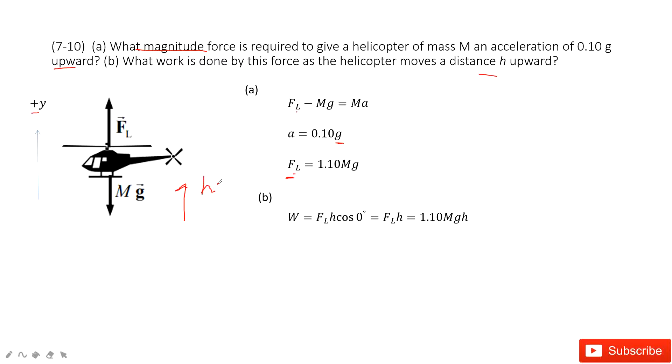So you can see, the angle between Fl and h is 0, so it becomes cosine 0 theta, or cosine 0 degrees.